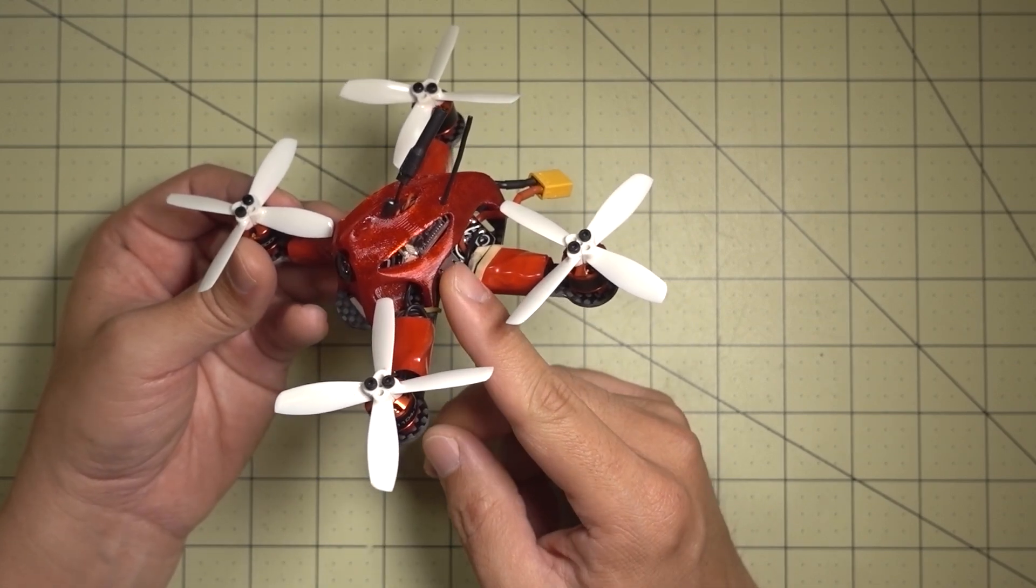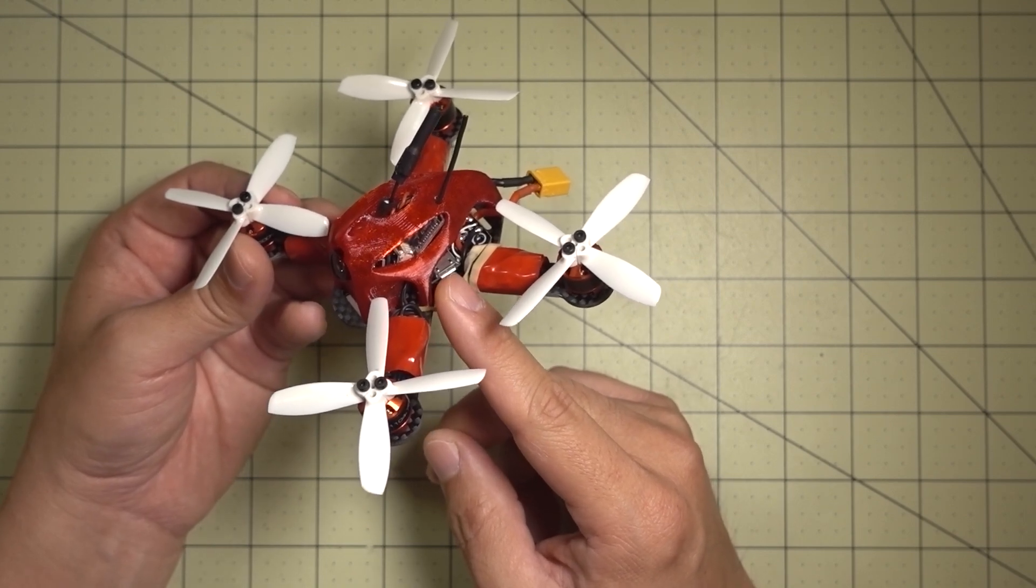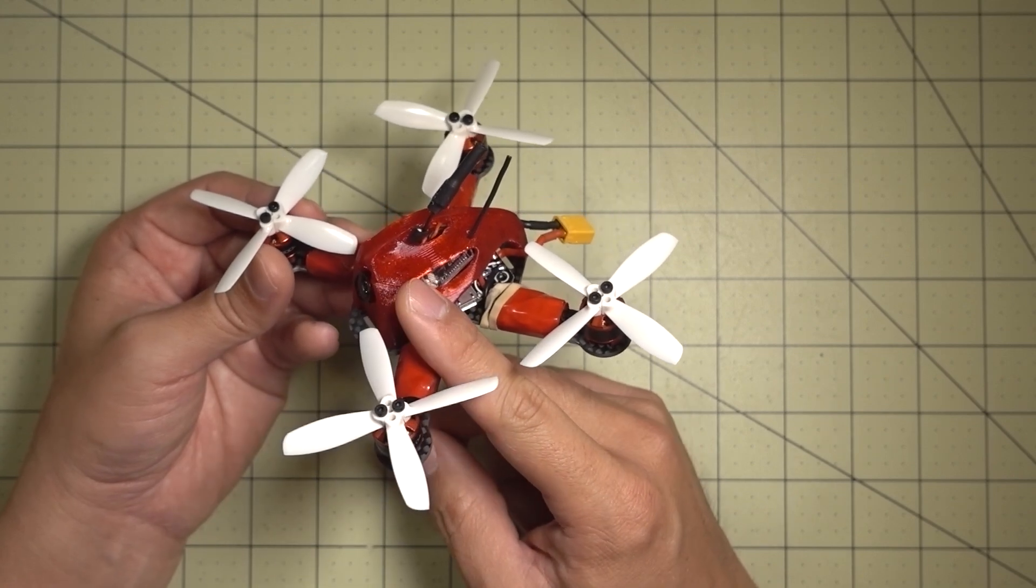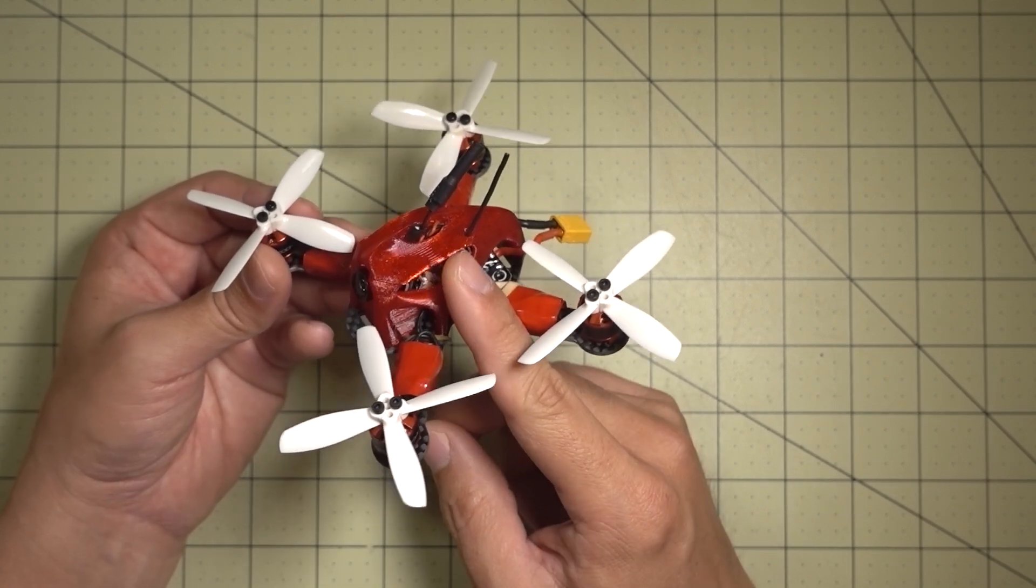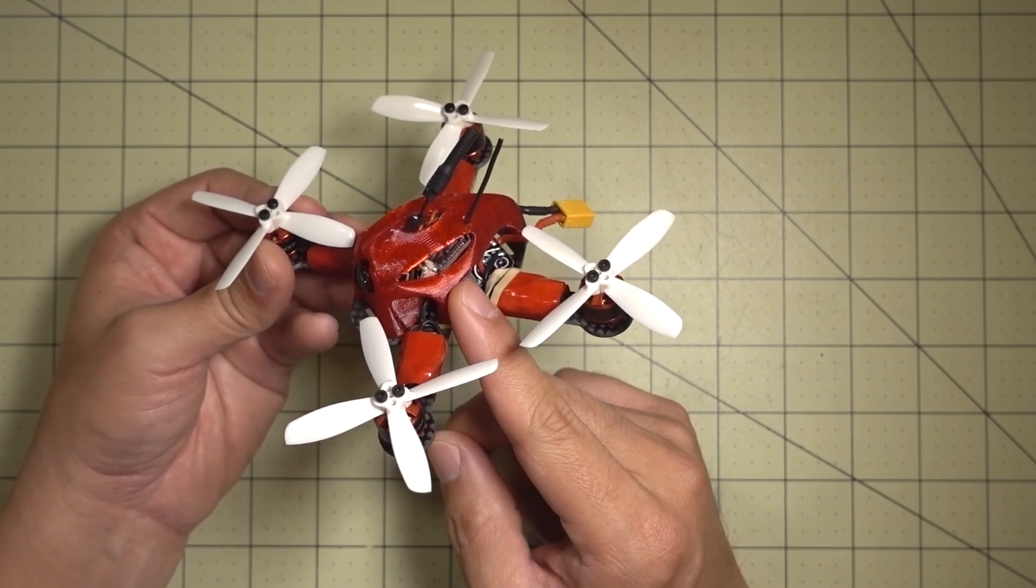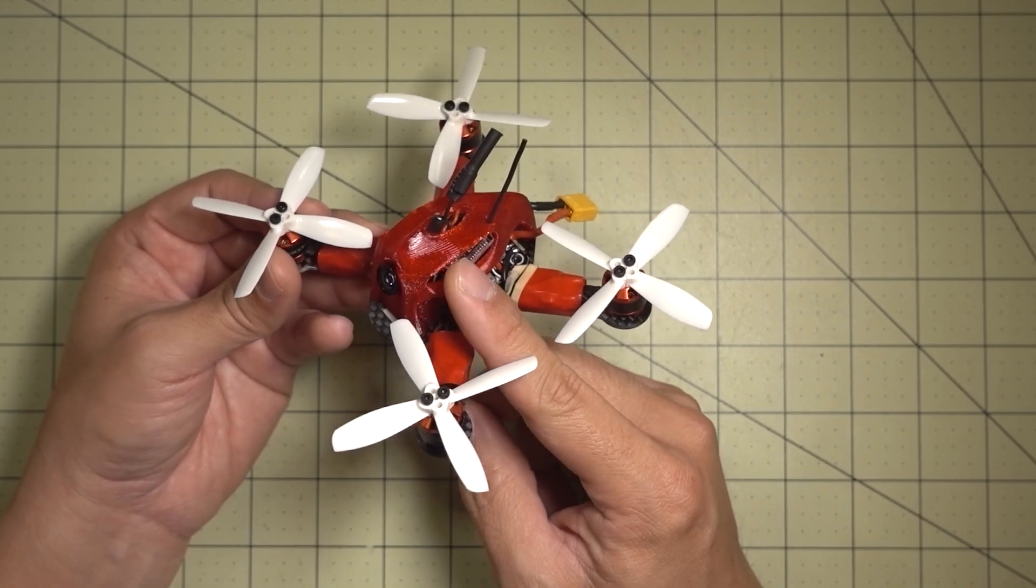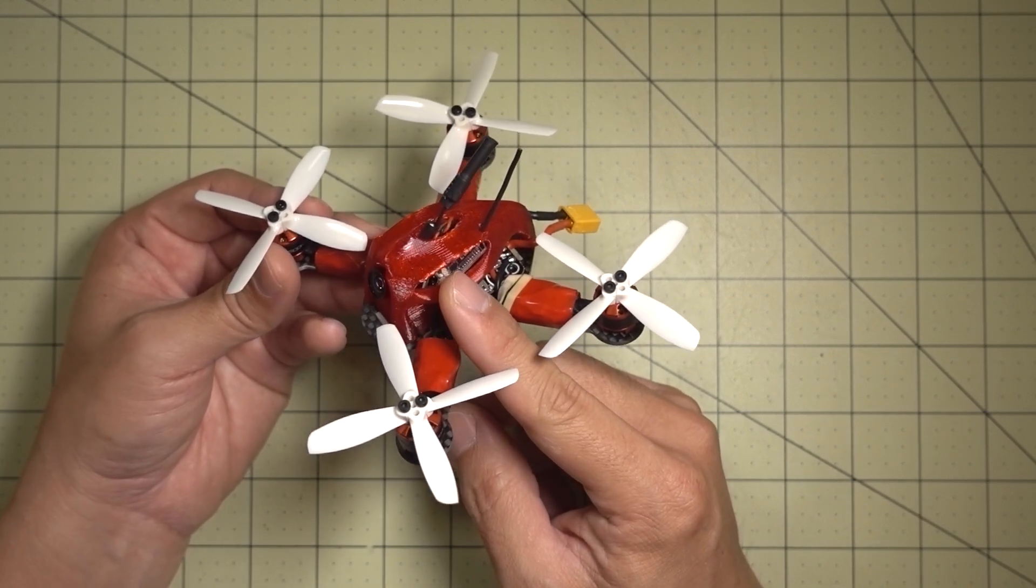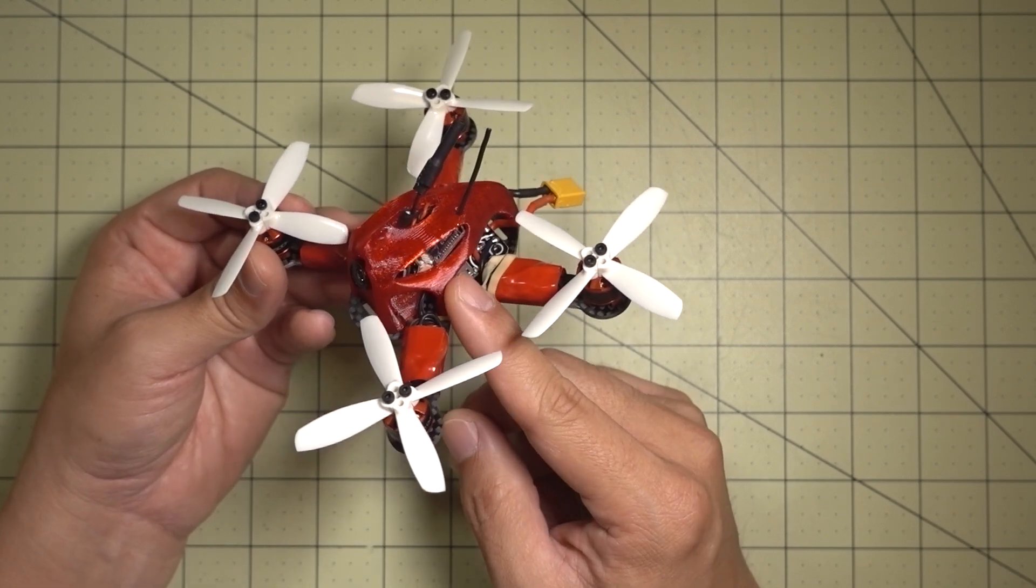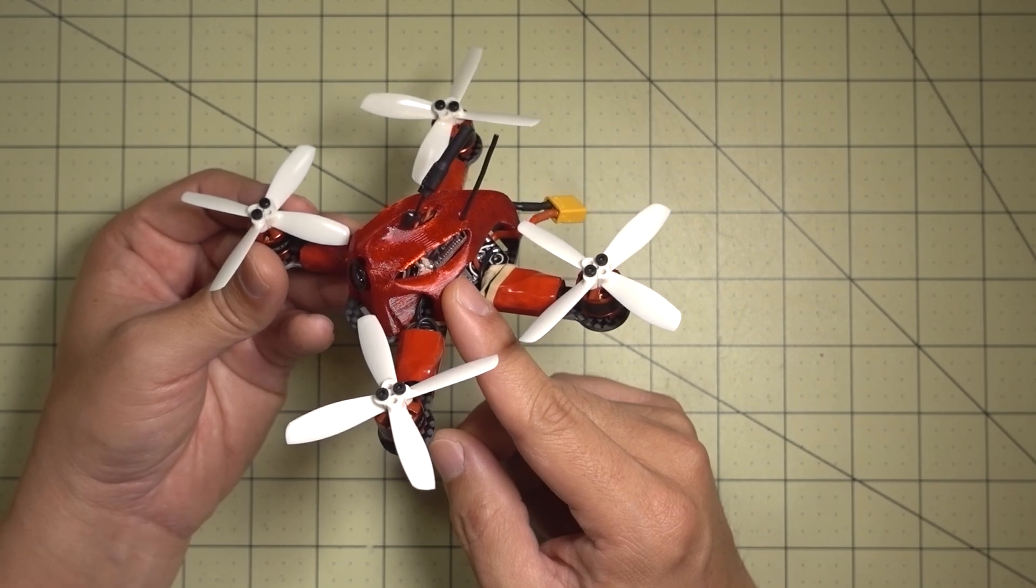So if that BEC is too weak, for example this F3 Omnibus has a 1 amp BEC in there, 1 amp is probably not enough to supply current to your video transmitter all in one camera plus your receiver plus all the stuff that's going on on your flight controller including an OSD. Even this one here is only a 25 milliwatts FX798T. If you put a 200 milliwatt on here it's going to draw more power and be more likely to cause a brownout.